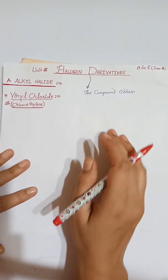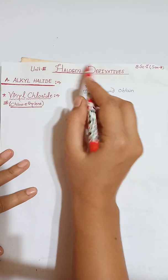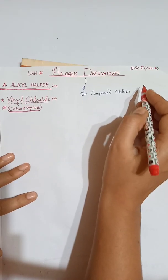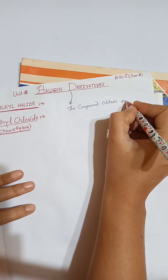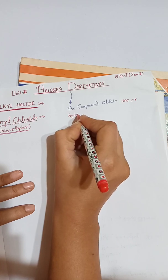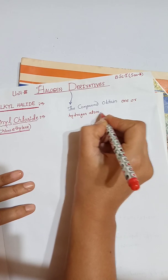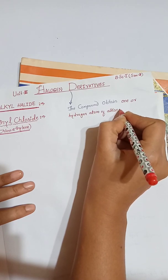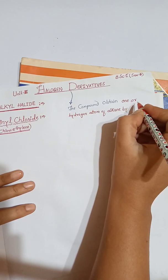Hello everyone, today we will discuss unit number three of PSE first year. First of all, we will see what is a halogen derivative. A halogen derivative is the compound which is obtained by replacing one or more hydrogen atoms of an alkane by a halogen.